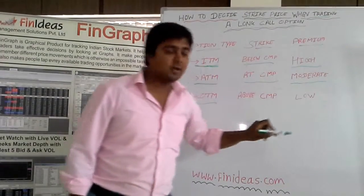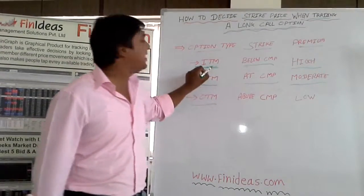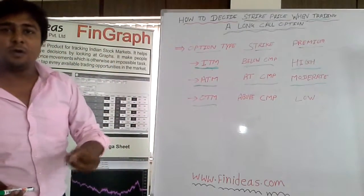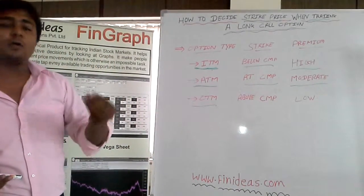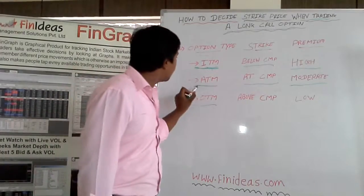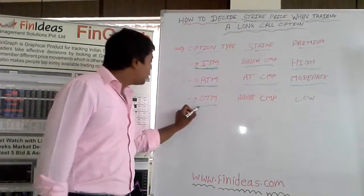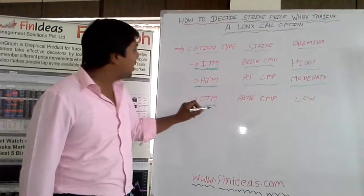So with a medium-term view or where you are going to have a moderate profit, you can try for ATM options. And OTM options are those options which are above the current market price.